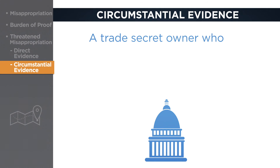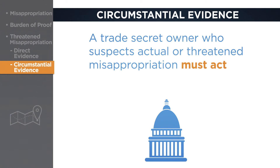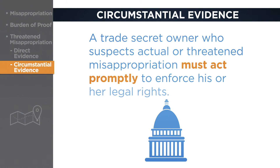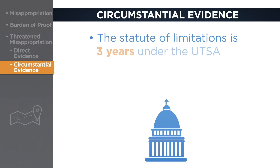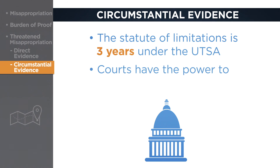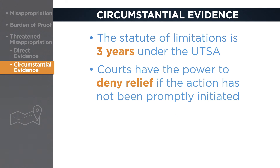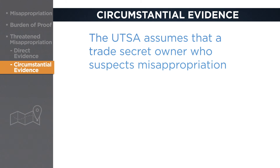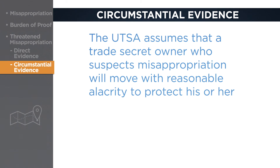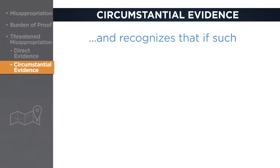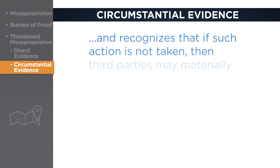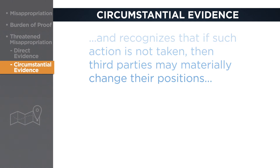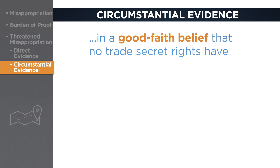A trade secret owner who suspects either actual or threatened misappropriation must act promptly to enforce his or her legal rights. Although the statute of limitations under the UTSA is three years, courts have the power to deny the relief requested by trade secret owners even when an action has been initiated within the statute of limitations period if the action has not been initiated promptly. The UTSA assumes that a trade secret owner who suspects misappropriation will move with reasonable alacrity to protect his or her intellectual property, and recognizes that if such action is not taken, then third parties may materially change their positions in a good faith belief that no trade secret rights have been violated.